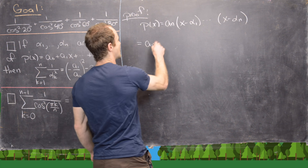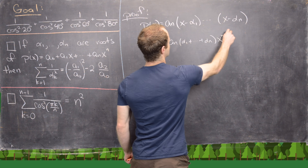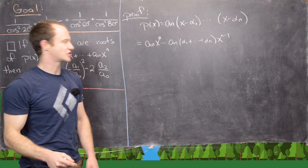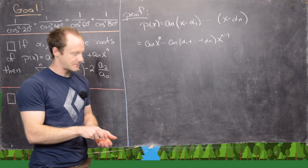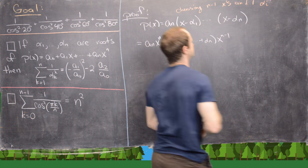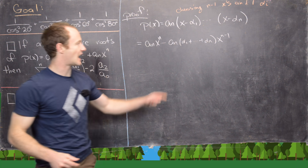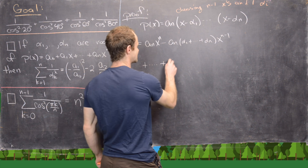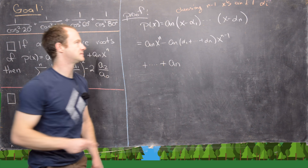Multiplying that out, the leading term is a_n * x^n, and then we get minus a_n times the sum of alpha 1 through alpha n, times x^(n-1). This comes from choosing n minus 1 x's and 1 alpha_i from the product of binomials — we do that n times, giving the x^(n-1) term and the sum of roots.